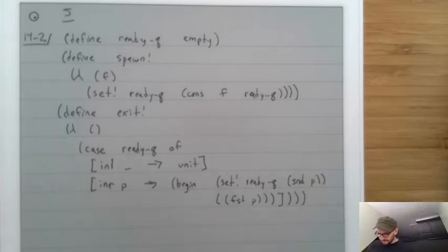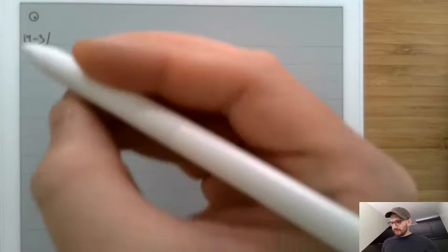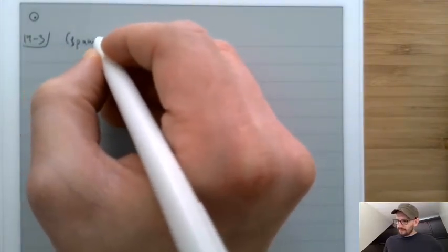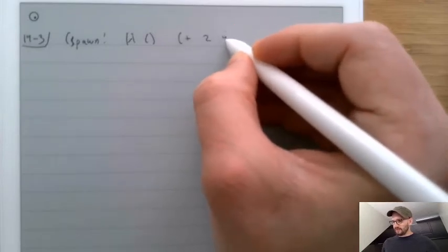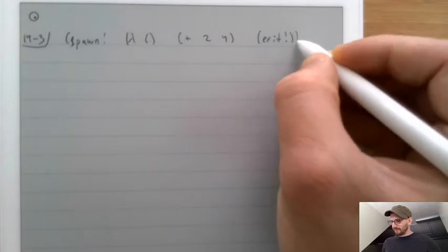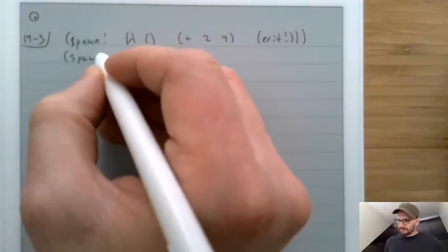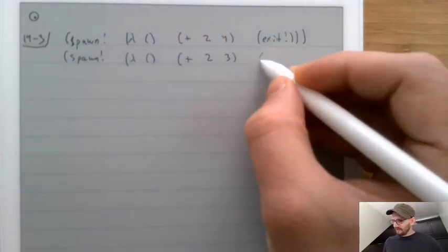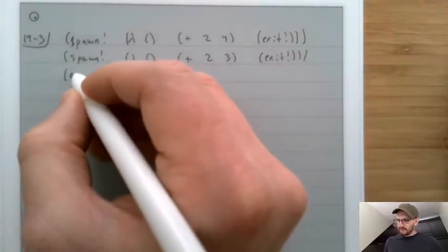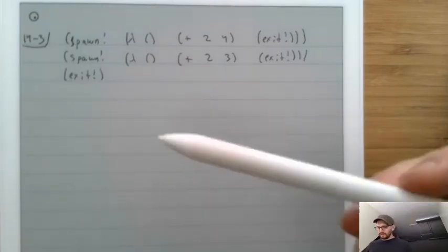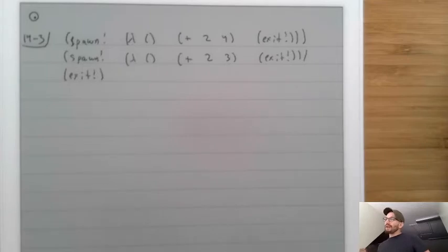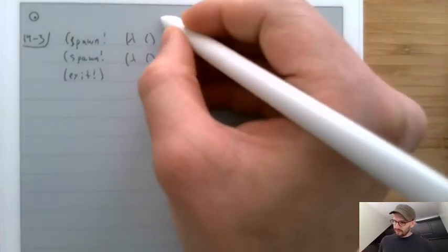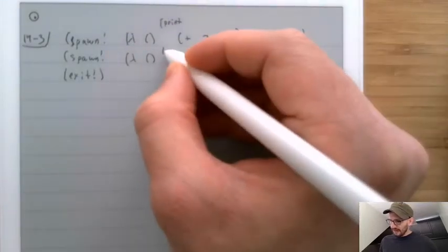So now we can write programs that call spawn and exit. Spawn will create a new thread, and exit will stop the current thread and switch to run the next one. For example, we could write: spawn a lambda that does plus 2 4 then exit, then spawn another lambda that does plus 2 3 then exit, then call exit. This program will spawn two threads and then kill the main thread, and then each spawned thread runs in sequence. I recommend adding a print operation to your CEK machine so you can actually see that these things are happening.